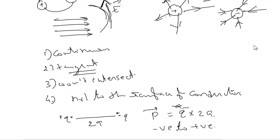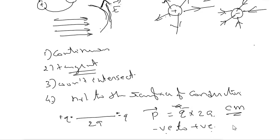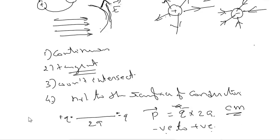The unit of electric dipole moment is Coulomb meter. The direction of electric dipole moment is from the negative charge to the positive charge.